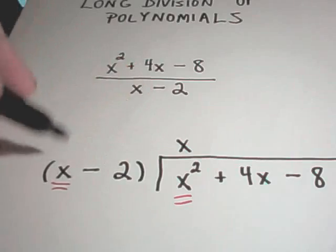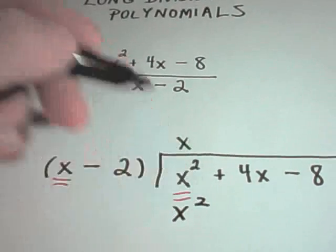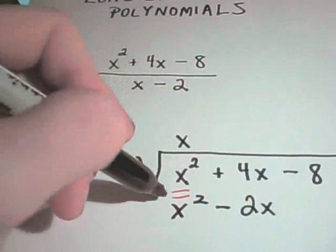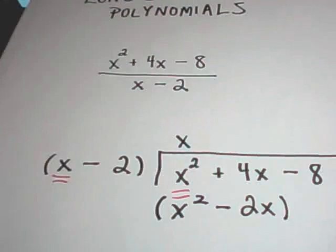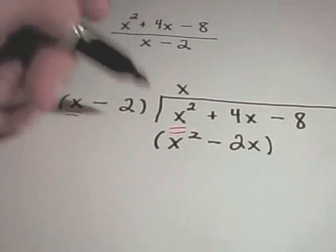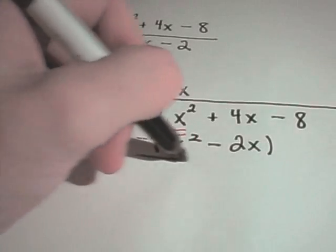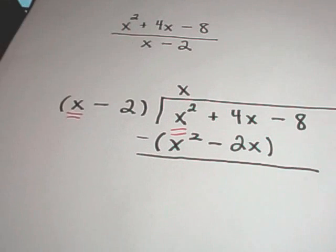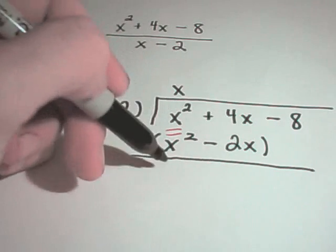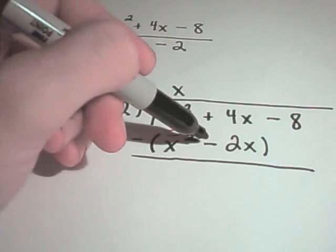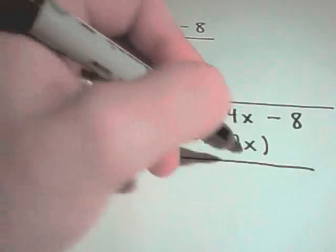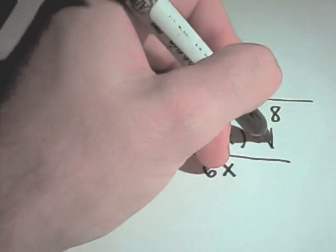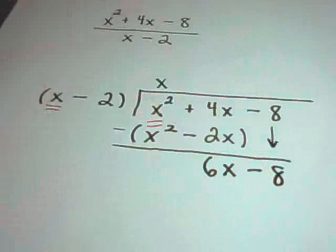And then what I do is I multiply, so x times x is x squared, x times negative 2 is negative 2x. And then I put this stuff in parentheses and I subtract it away. So x squared minus x squared is no x squareds, and that's what always should happen. Your first thing should cancel out. You'll get 4x minus negative 2x, which is 4x plus 2x, or 6x. And then we'll drop down our negative 8.